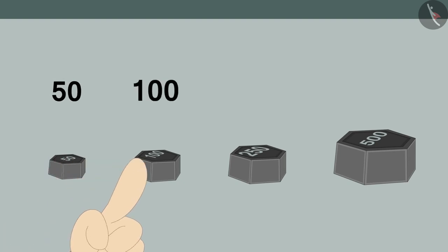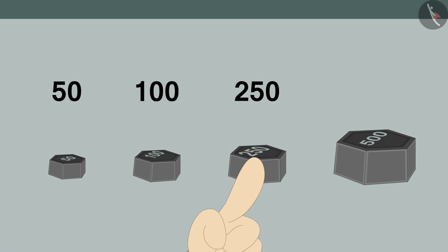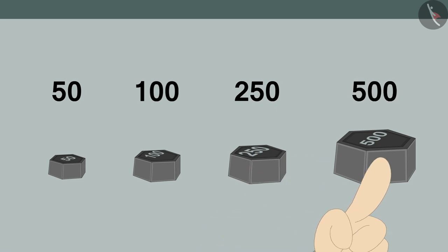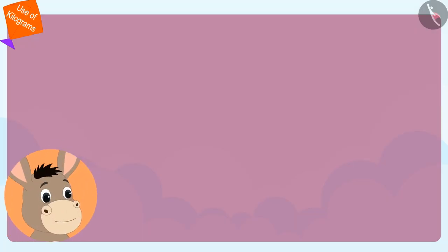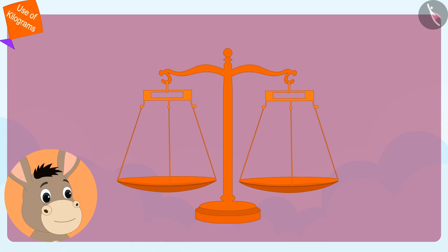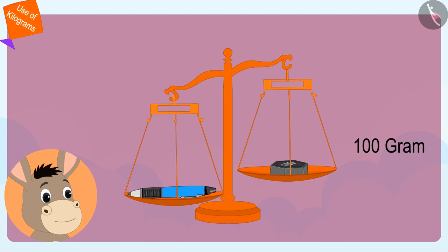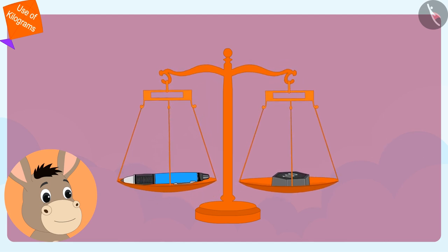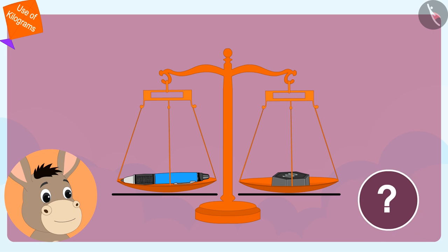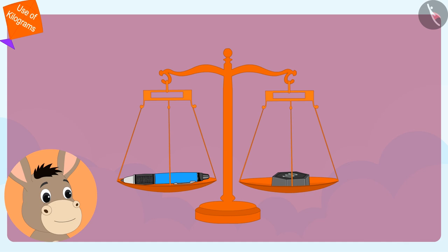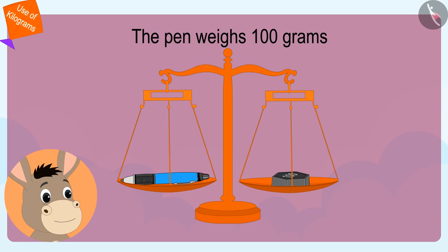Bhola showed Appu 50, 100, 250 and 500 grams weights. Then he took the scales from Appu and placed a pen on one side of the scale and 100 grams weights on the other side. Both sides of the scale came to the same level. Kids, do you know what this means? Yes, this means that Bhola's pen weighs 100 grams.